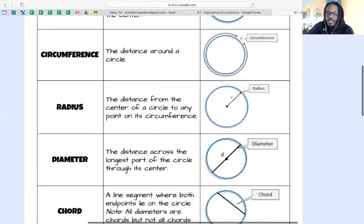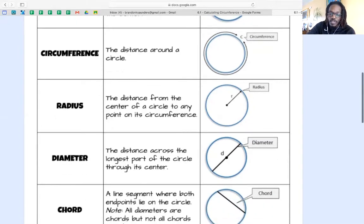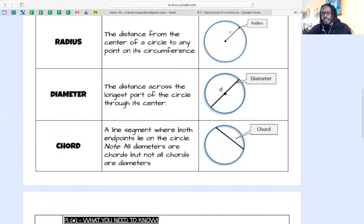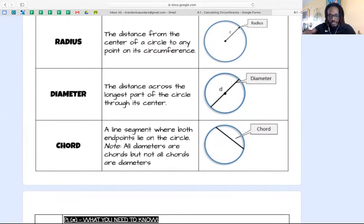Diameter is the distance between two points that are on the opposite ends of the circle. So think about the diameter being the distance from this point right here all the way through the center to the other point. So diameter is distance across the longest part of the circle through its center. You can think of diameter as the line that cuts the circle in half.